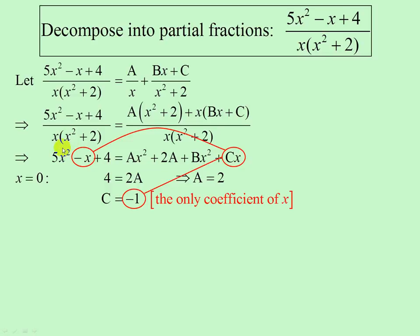Now these have to be matched totally: 5x squared, Ax squared, plus Bx squared, so in fact 5 must equal A plus B. Minus 1 must equal C, and 4 must equal 2A. So there's a quick way around if you want to.